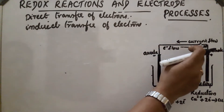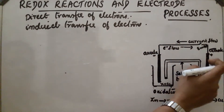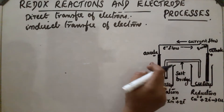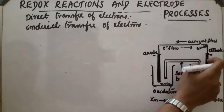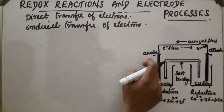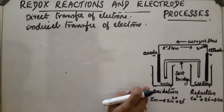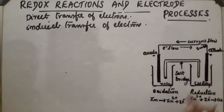The electron flow will be from anode to cathode. This is the anode and this is the cathode. This is the zinc electrode and this is the copper electrode. The zinc electrode is dipped in zinc sulfate solution and the copper electrode is dipped in copper sulfate solution.